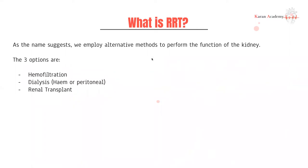As the name suggests, we want to employ alternative methods to perform the basic functions of the kidney. This would obviously be used for kidney failure, but there are also various other circumstances where renal replacement therapy is warranted. The options, in order of invasiveness, are: hemofiltration, dialysis — which can be hemo or peritoneal — and lastly renal transplantation.